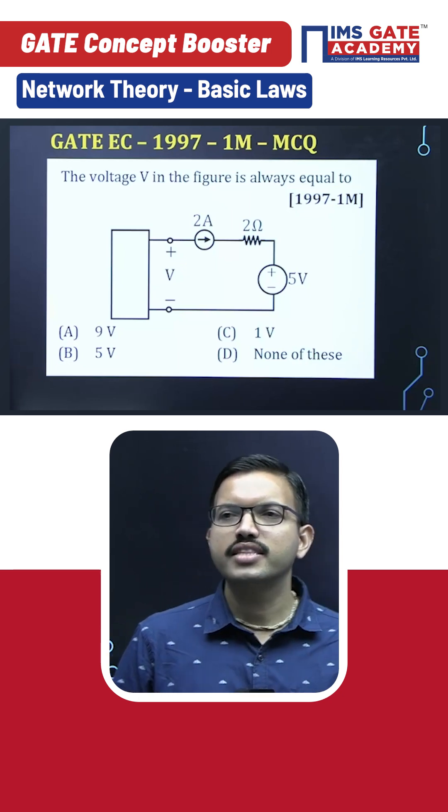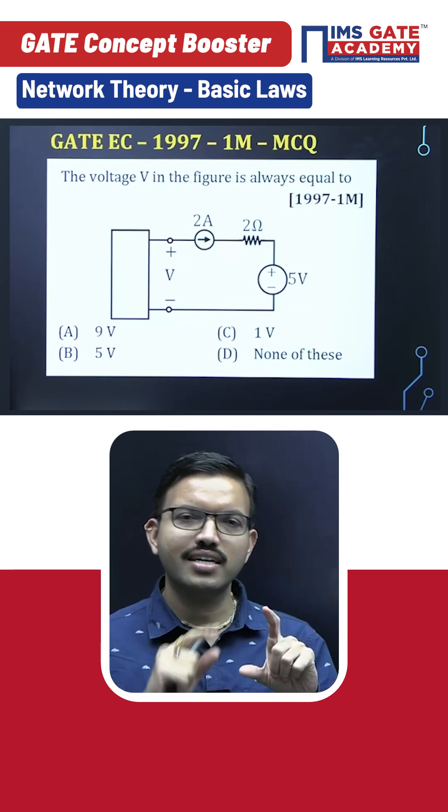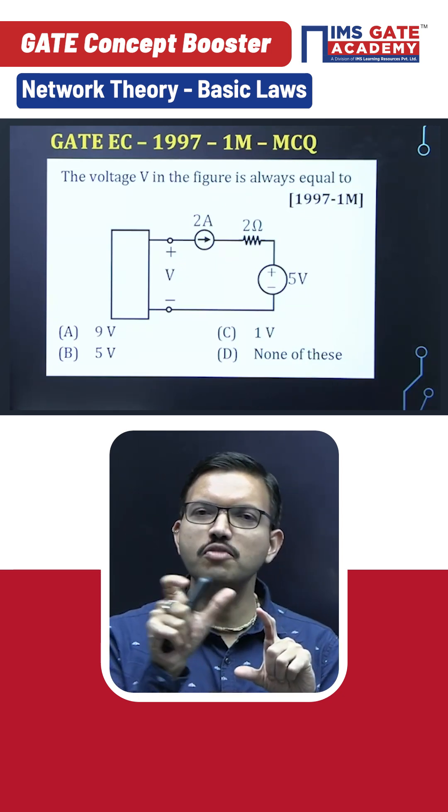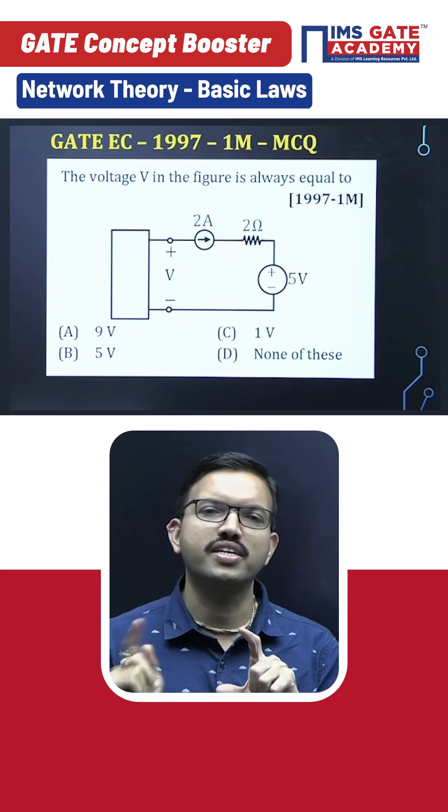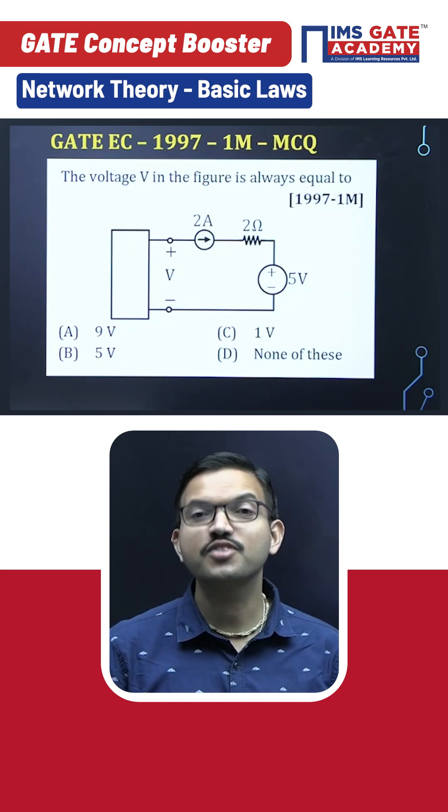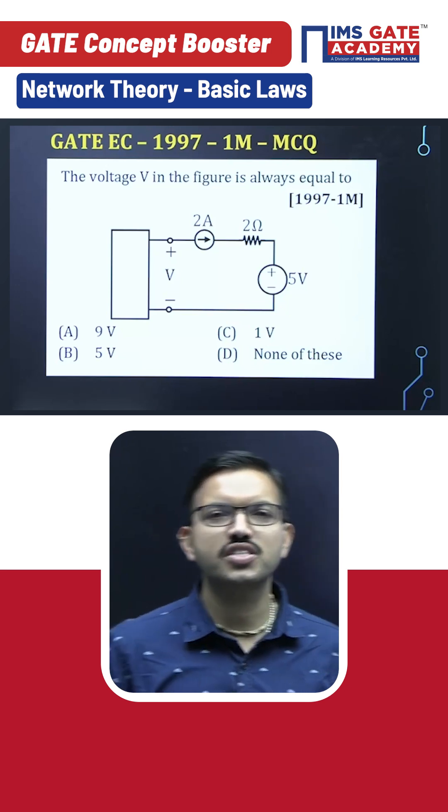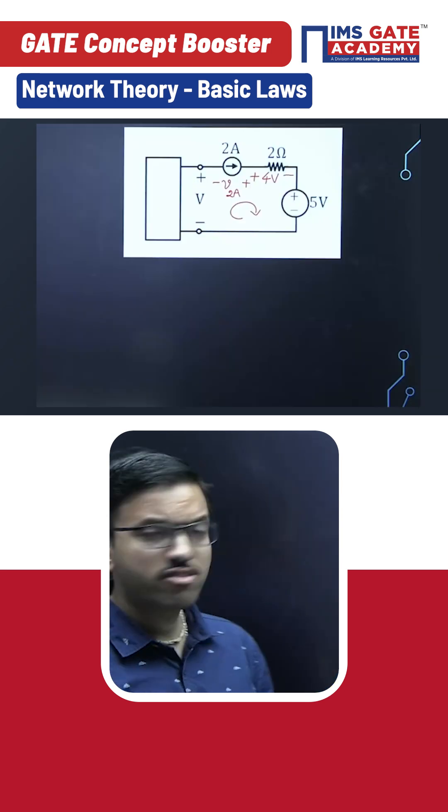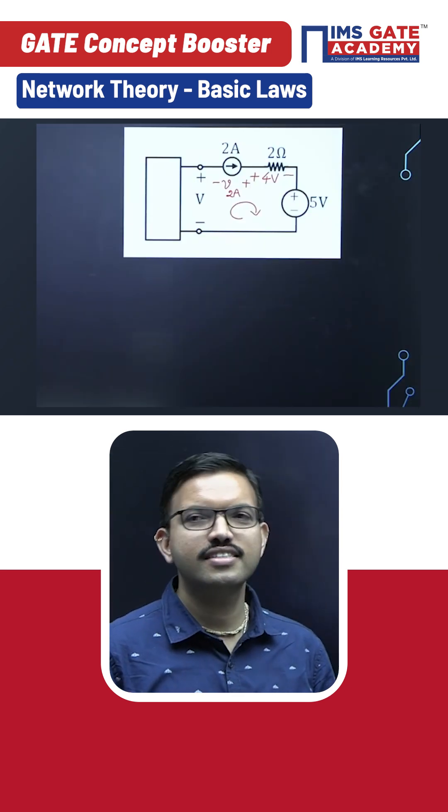If you're focusing only on the voltage across the two-ohm and five-volt source, you're missing the two-ampere source in the circuit. That is the most interesting twist in this question.